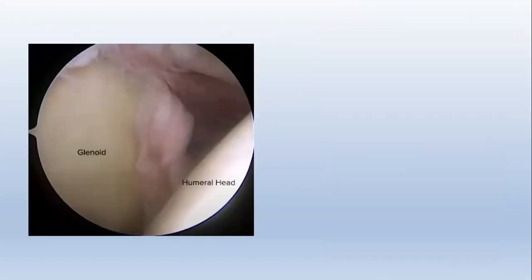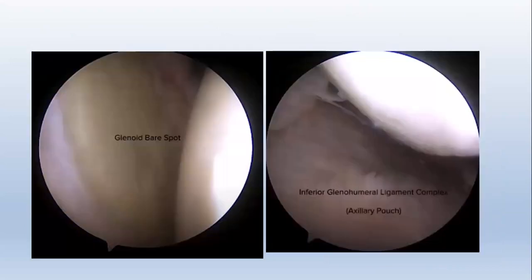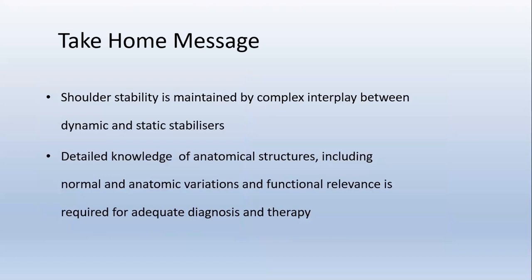This is an arthroscopic image showing the glenoid and humeral head. Going anteriorly, you can see the anterior labrum, superior glenohumeral ligament, and biceps tendon. In the center of the glenoid, we can see the glenoid bare spot. Going inferiorly, you can see the axillary pouch and inferior glenohumeral ligament complex. On the posterolateral aspect of the humeral head, near the rotator cuff insertion, you can see the bare area on the humeral head. Through the lateral portal, you can see the scapular spine, anteriorly supraspinatus, and inferiorly infraspinatus.